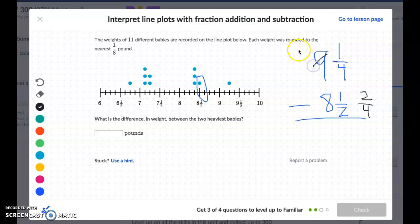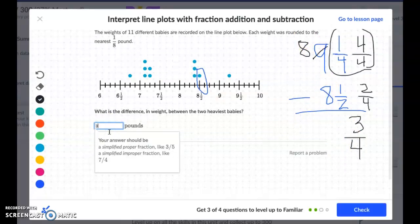So now I have ¼ take away 2/4 which I can't do. So I'm going to borrow and make this an 8. And if I take away that 1 I'm going to make that 1 over here 4/4 because 4/4 is a whole. So now on the top here I have 5/4 take away 2/4 which would give me ¾. And then 8 take away 8 is zero. So my final answer is going to be ¾.